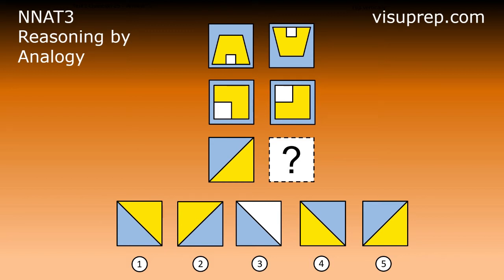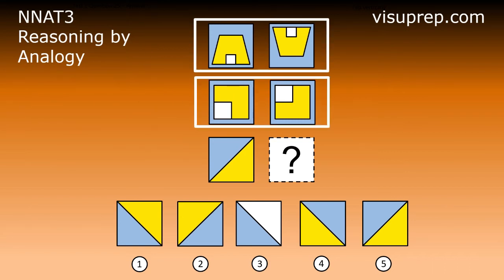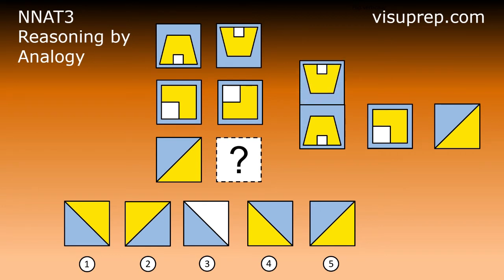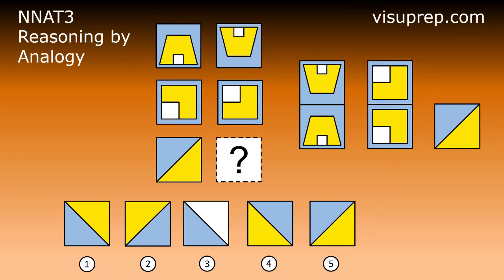The answer is option 1. Looking at each row, the second box is the first box flipped vertically. Flipping the first box in the first row vertically, we get the second box. And flipping the first box in the second row vertically, we get the second box. Therefore, the answer is the result of flipping the first box in the third row vertically — i.e., option 1.